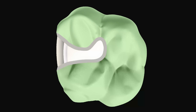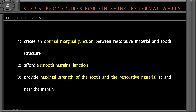Finishing the external walls plays a very important role. The external wall is the wall highlighted between the prepared tooth and the unprepared tooth surface. Similar to the cavo-surface margin, it is the wall present between the inside of the cavity and the outside, which is the unprepared tooth. This wall is called the external wall, and its configuration is very important for the success of the restoration.